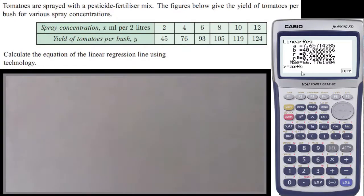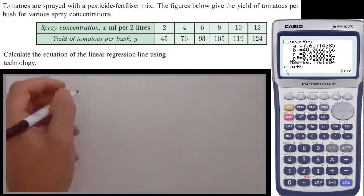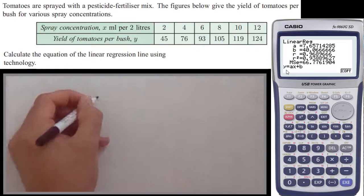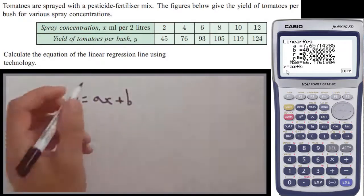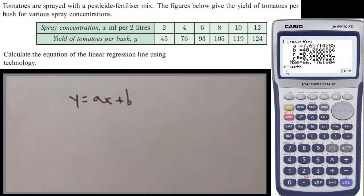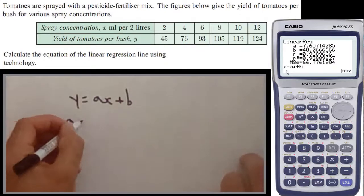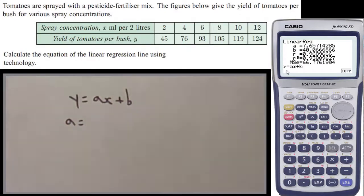And it's telling us everything we need to know here. So if you just look at the bottom, Y equals AX plus B. So we have the equation of a line is Y equals AX plus B. It tells us the value of A and it tells us the value of B. If you are not told otherwise, you should always give these to three significant figures. So A equals 7.657, so I'm going to set 7.66.